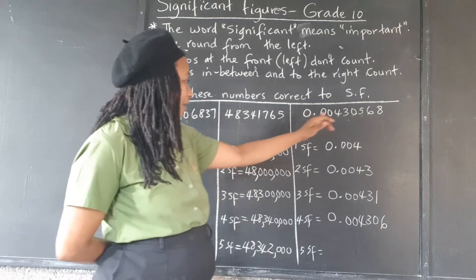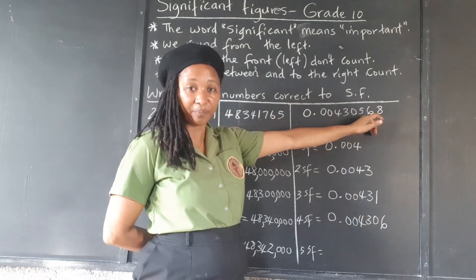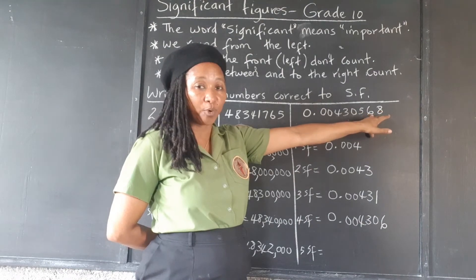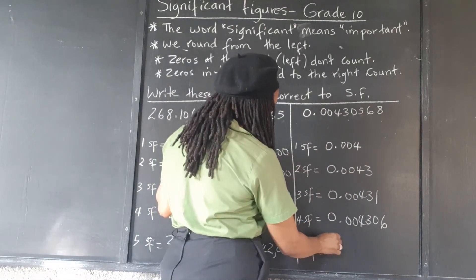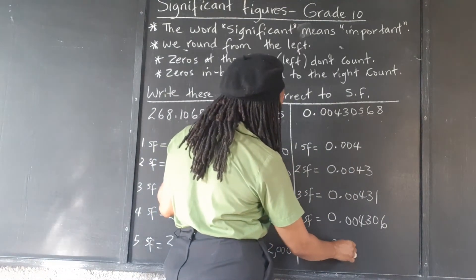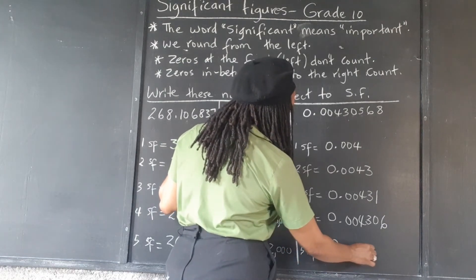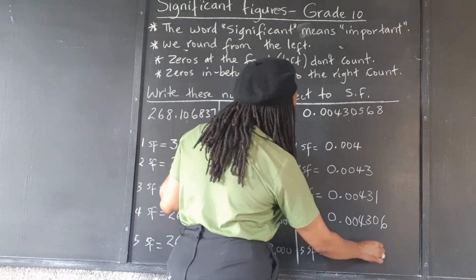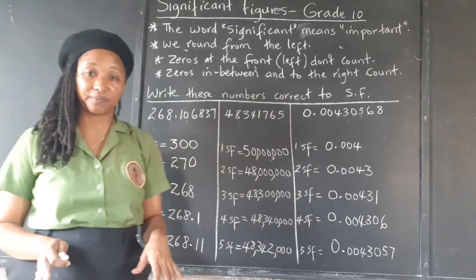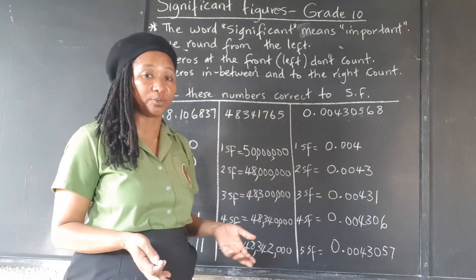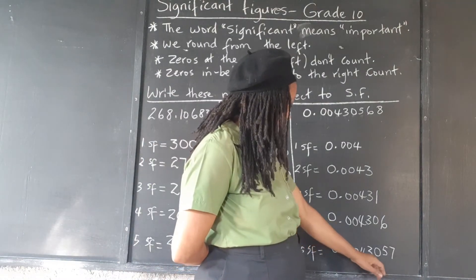Five significant figures: one, two, three, four, five — the eight is more than five, so we add one to the six. The eight just drops off because we don't need it — we're saying we don't want to concern ourselves with anything more than five figures. So the five significant figures result is 0.0043057.